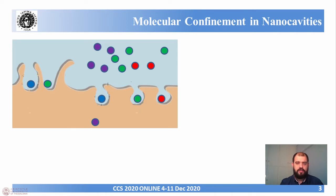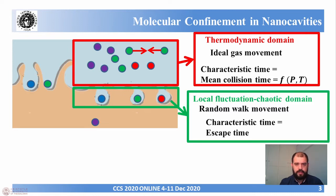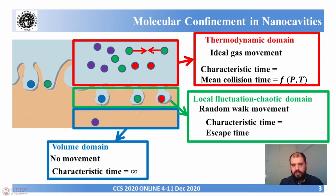The space around the surface and the surface can be divided in three different domains. The first one, the external domain, or else the thermodynamic domain, where the thermodynamic equations are valid. There, the movement of the molecules can be simulated as an ideal gas movement. So the characteristic time of this domain is the mean collision time, which depends on pressure and temperature. The second one is the two-dimensional surface domain, where nanocavities are present, or else the local fluctuation domain. The molecules there have a chaotic behavior as they are trapped inside the nanocavities. The movement of them inside the nanocavities can be simulated as a random walk movement. So the characteristic time is the escape time. In other words, the time a molecule passes inside the nanocavities before it exits to the external domain. The last one is the volume domain, the bulk material, where no movement is present and the characteristic time is infinite.